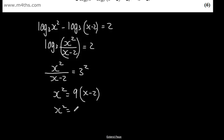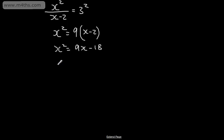Expanding the brackets, x squared is equal to 9x minus 18. We have a quadratic equation in x, so we'll subtract now the 9x from both sides and add 18.